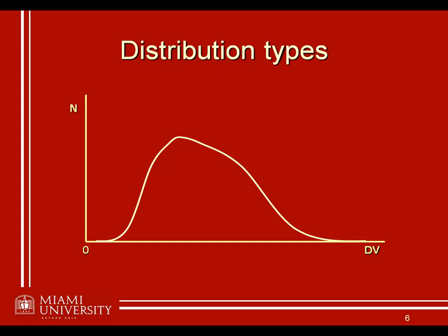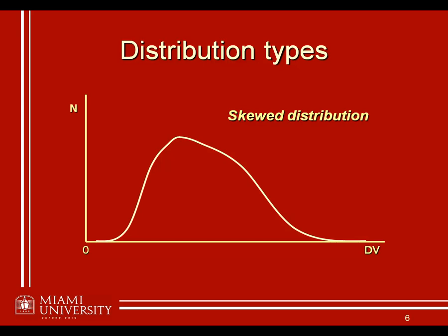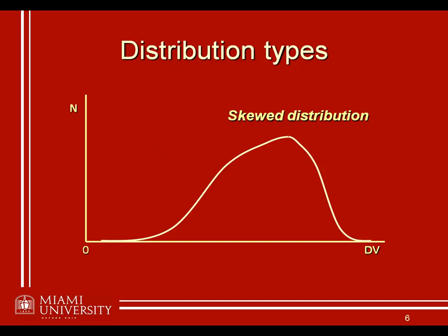Now if we take one of the tails of this normal distribution and stretch it out a little bit — in other words the scores might still be bunched up in one area, but there are relatively few scores that are either very high or very low — those are both examples of what we would call a skewed distribution. We make a further distinction between whether the distribution is positively skewed, where the tail is stretched out to the upper scores and higher-valued scores occur relatively infrequently, or negatively skewed, where it's the lower-valued scores that appear relatively infrequently and most scores are bunched up near the top of the scale.